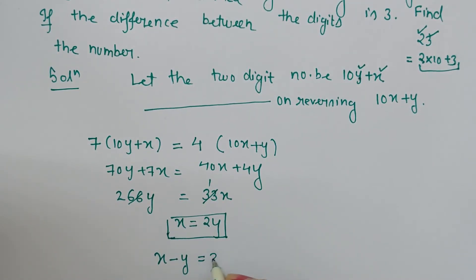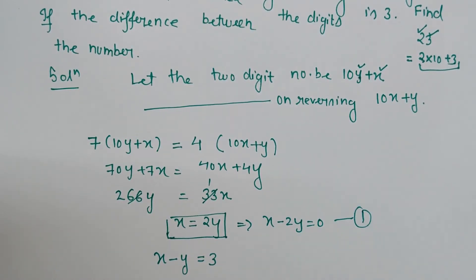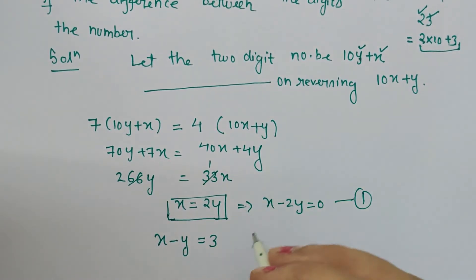This is another equation. So from here we get x minus 2y is equal to zero. This is my first equation. And the other equation is x minus y is equal to three because difference of the digits given is three.